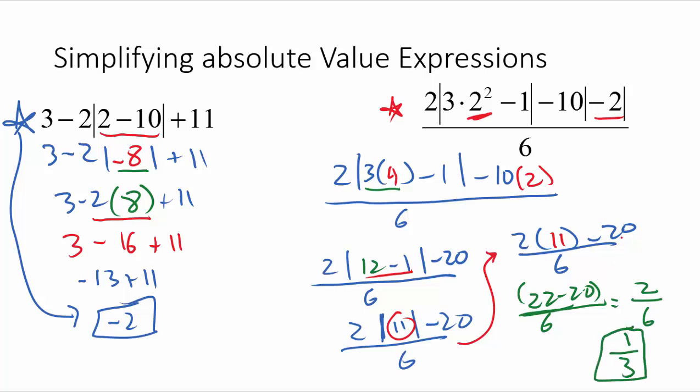The key here when you're simplifying an absolute value expression, don't try to bring numbers from the outside of the absolute value into it. Simplify the whole inside like it's its own separate problem. And then whatever you get it down to, take it, make it positive, and drop the absolute value bars.